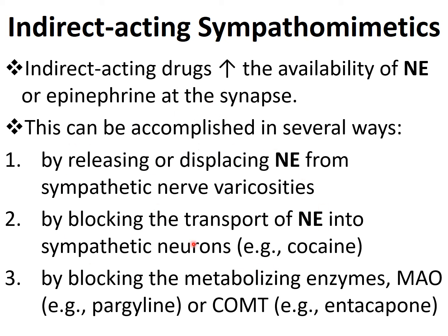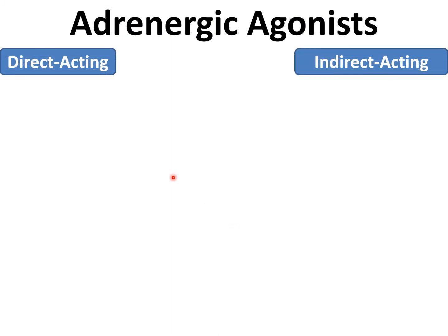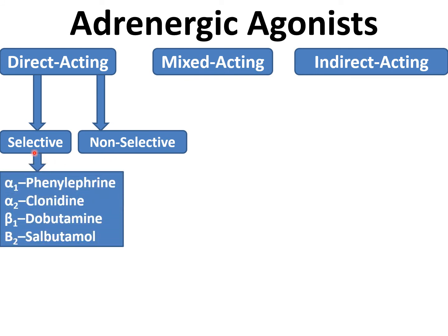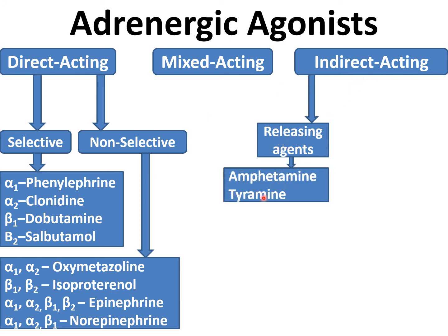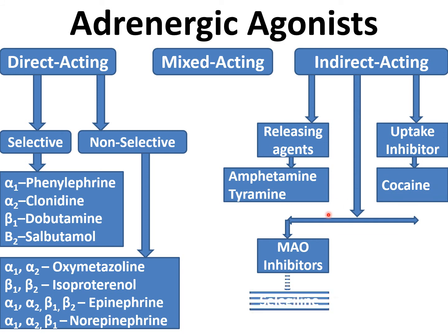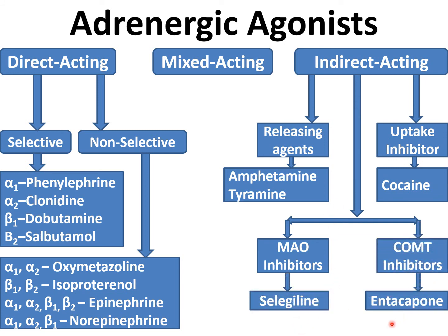Among direct acting drugs, selective examples include: phenylephrine (selective alpha-1), clonidine (selective alpha-2), dobutamine (selective beta-1), and salbutamol (selective beta-2). Non-selective examples include oxymetazoline (alpha-1 and alpha-2), isoproterenol/isoprenaline (beta-1 and beta-2), epinephrine (all receptors), and norepinephrine (all except beta-2). For indirect acting agents: releasing agents include amphetamine and tyramine; uptake inhibitors include cocaine; enzyme inhibitors include MAO inhibitors like selegiline and COMT inhibitors.